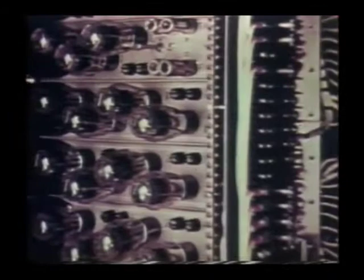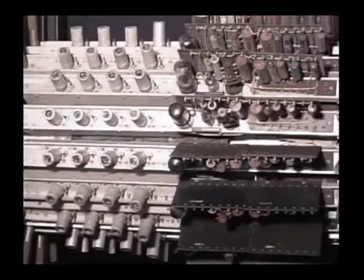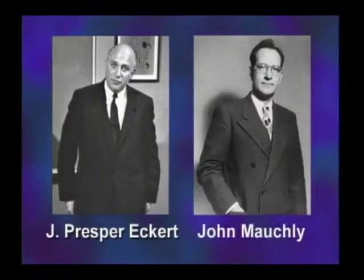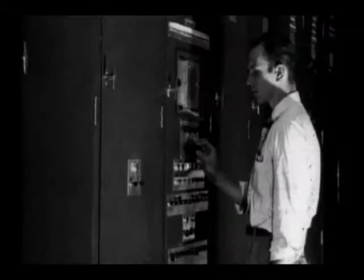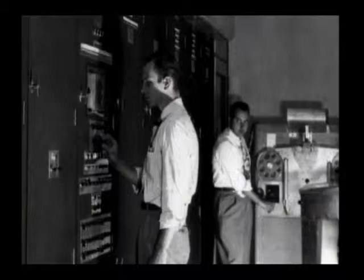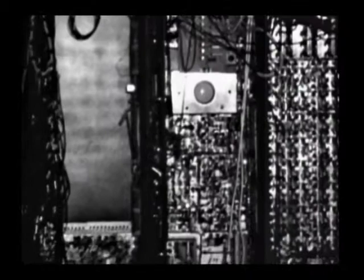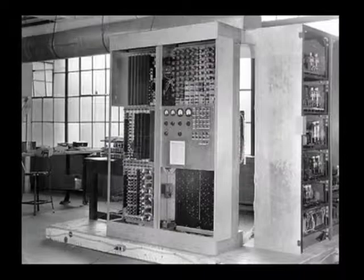Computer historians are still arguing which computer was first — was it the Z3, ABC, ENIAC, EDVAC, EDSAC, or the Manchester Mark One? Before ENIAC was completed, J. Presper Eckert and John Mauchly teamed up with mathematician John von Neumann to work on EDVAC — the Electronic Discrete Variable Automatic Computer. EDVAC utilized 3,600 vacuum tubes and was supposed to be the first stored-program computer, meaning programs are stored in memory alongside the data to be processed.